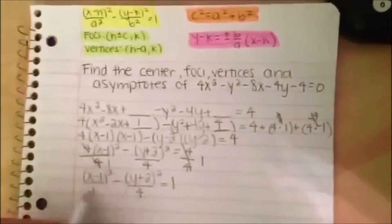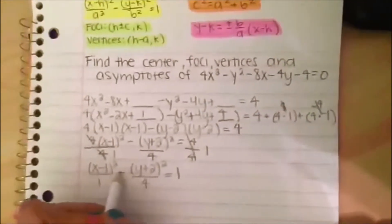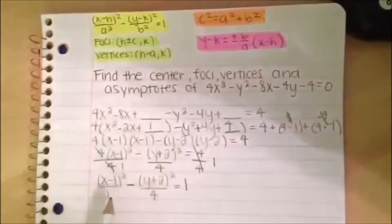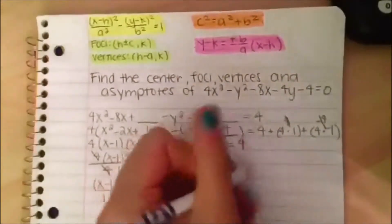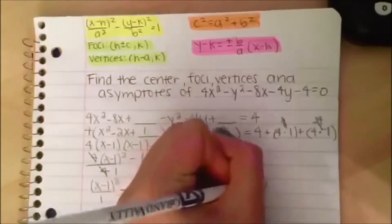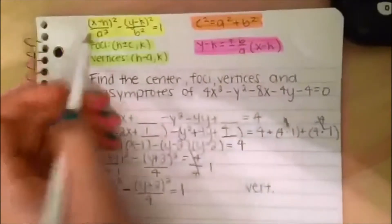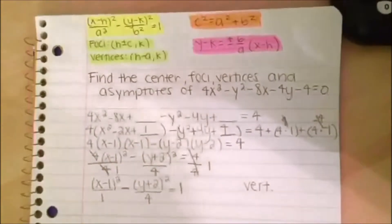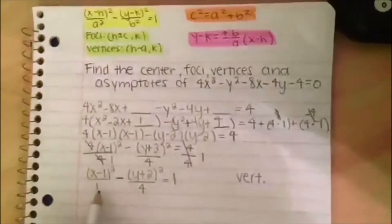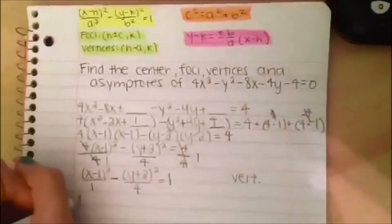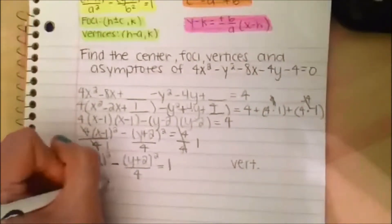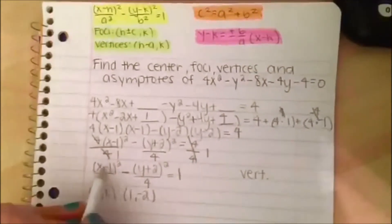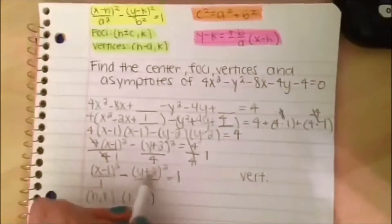Since the x term is in front of the negative, which is what the hyperbola formula requires, this is a vertical hyperbola. We refer to the vertical hyperbola formula where x is in front. The center, h and k, is (1, negative 2), coming from x minus 1 and y minus 2.